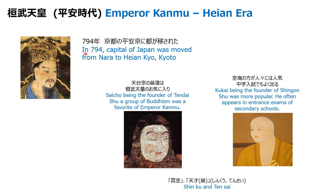Emperor Kanmu hated that situation, and in 794 he moved the capital from Nara to Heian-kyo, which is Kyoto. Kyoto is very famous for sightseeing in Japan and around the world, and Emperor Kanmu is kind of the person who contributed to that sightseeing today.